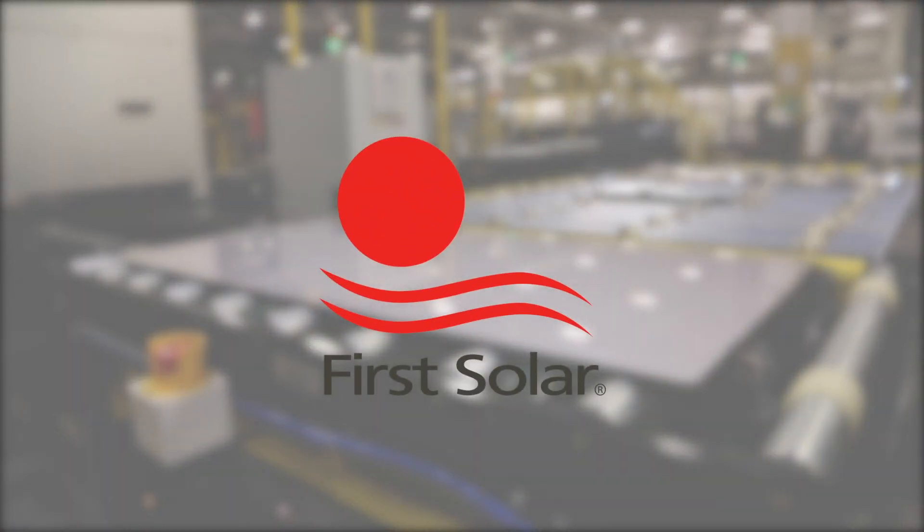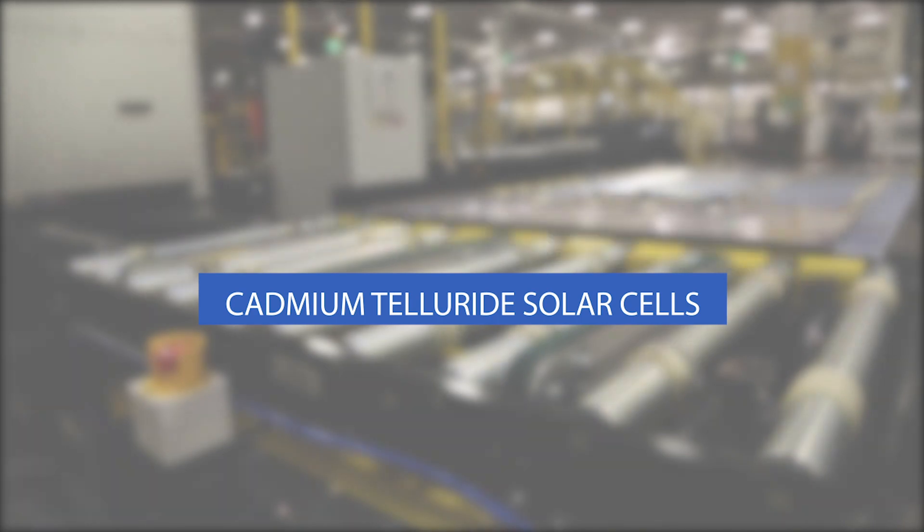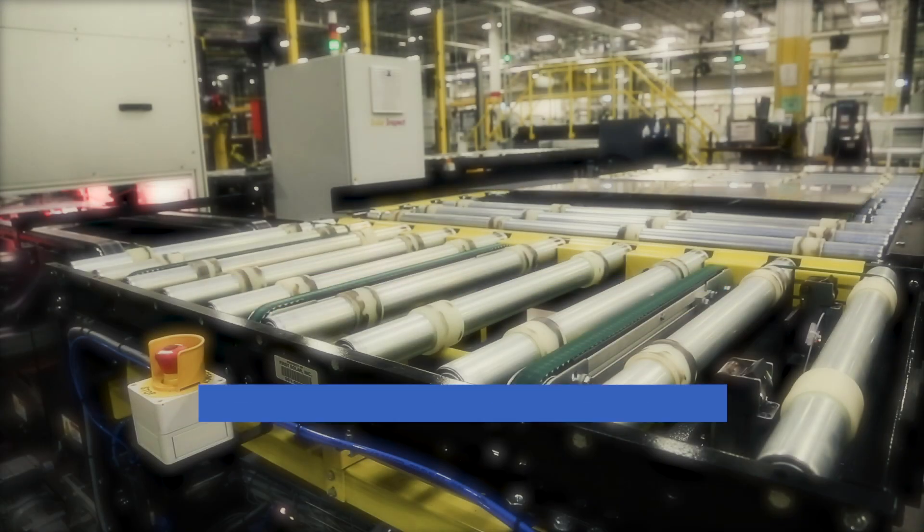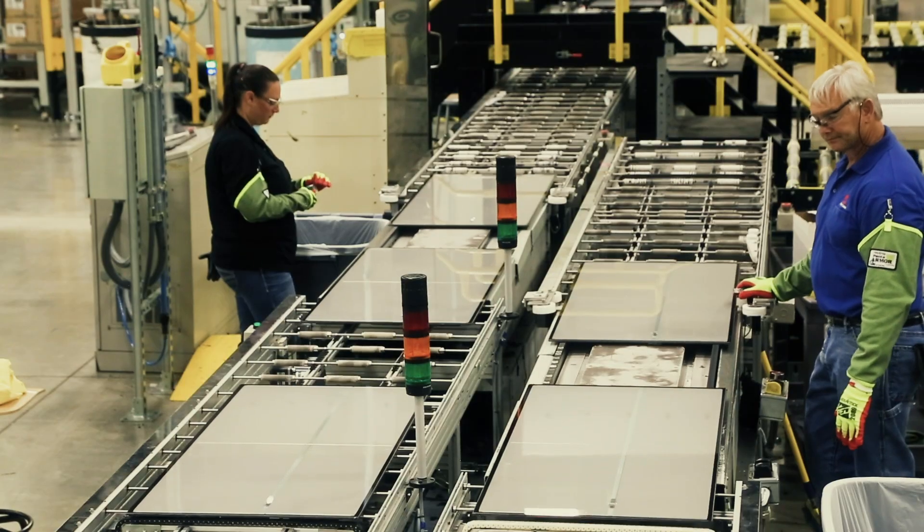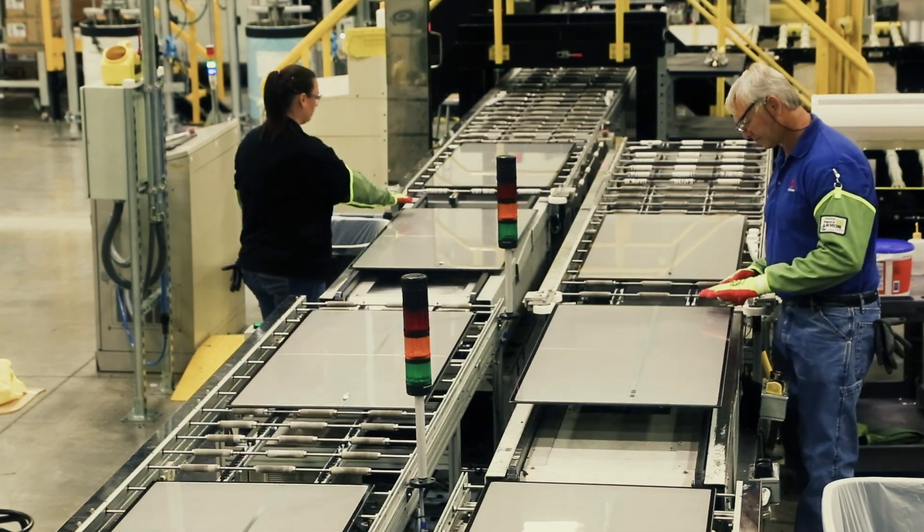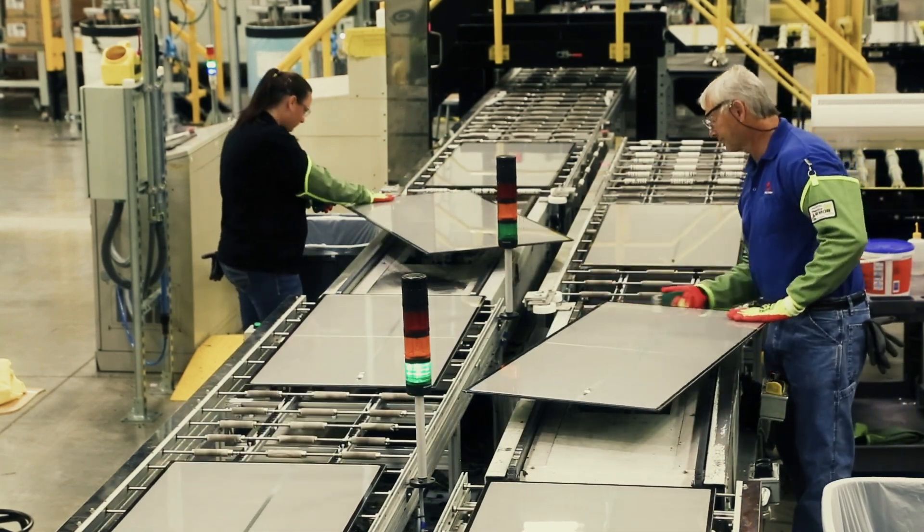The largest U.S.-based PV manufacturer, First Solar, produces cadmium telluride solar cells. Coated glass enters a factory and is processed into a completed solar module in just four and a half hours, with the lowest carbon footprint.